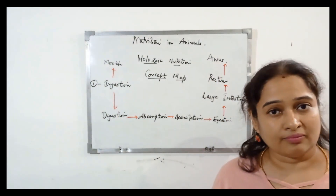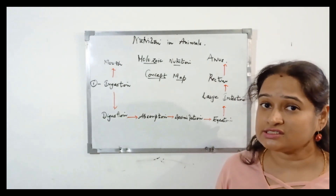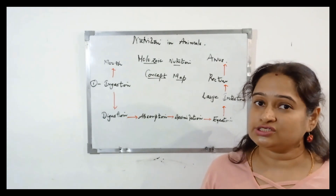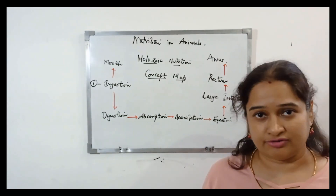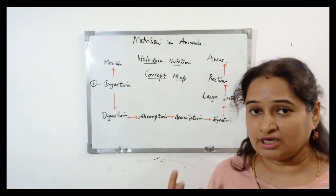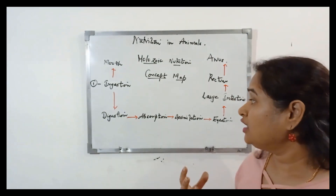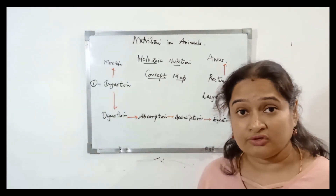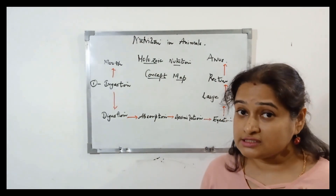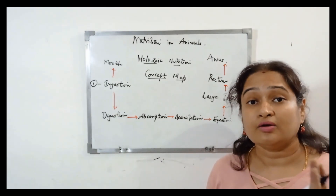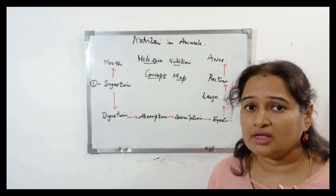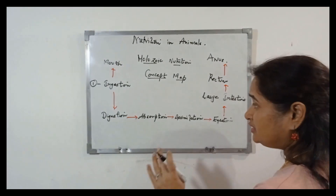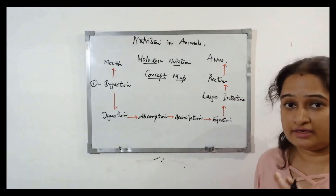Once the food enters into the mouth, the second step is digestion. The process of digestion takes place in the entire alimentary canal. In this process, the large molecules which have been ingested by mouth — they are insoluble in nature — are broken down into small water-soluble molecules in our alimentary canal.